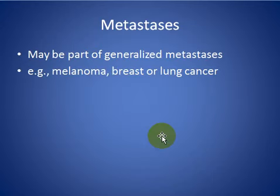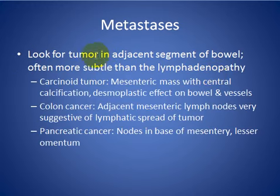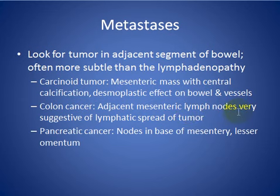Metastasis is the second most common cause of mesenteric lymphadenopathy. It may be part of generalized metastasis, such as in melanoma, breast, or lung cancer. You should look for a tumor in an adjacent segment of the bowel, which is often more subtle than the lymphadenopathy. Carcinoid tumor presents as a mesenteric mass with central calcification associated with a desmoplastic effect on the bowel and blood vessels. Colon cancer with adjacent mesenteric lymph nodes is very suggestive of lymphatic spread of the tumor.